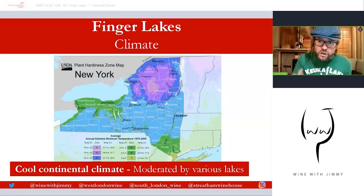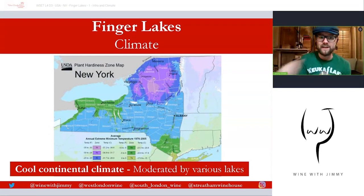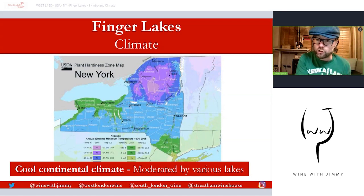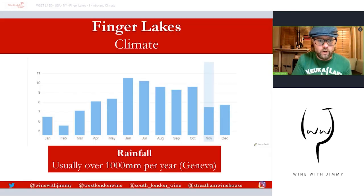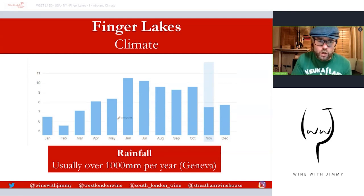The Finger Lakes AVA covers around 11 finger-shaped, very long and very deep ex-glacial lakes. From a satellite image above, it looks like a pair of hands with all those fingers. These conditions created by the lakes make the production of Vitis vinifera possible here — something identified by Dr. Konstantin Frank back in the 1950s and 1960s. Rainfall is typically over 1,000 millimeters per year, as measured at the Geneva station, spread fairly evenly across the year with somewhat more in summer and less in winter.